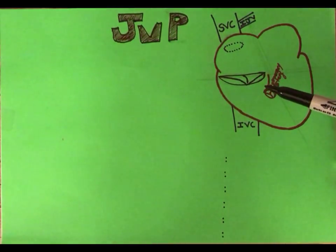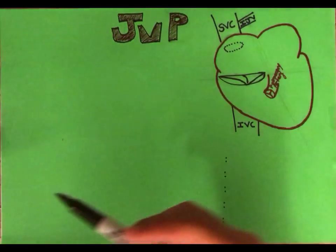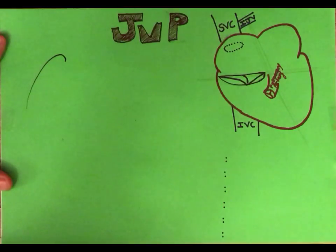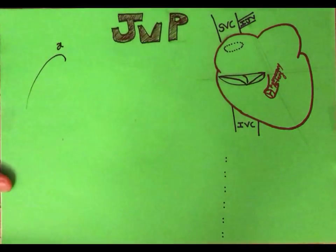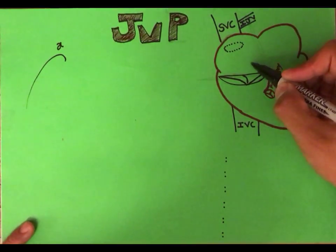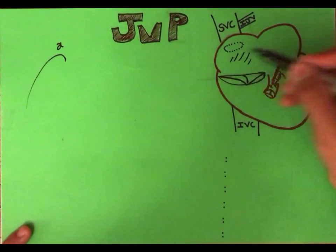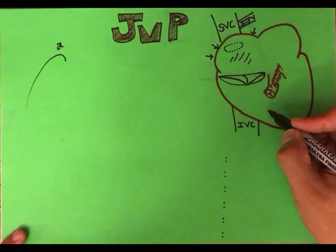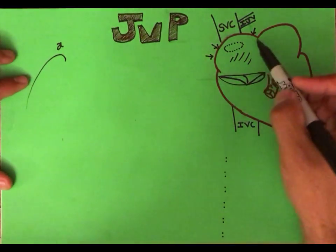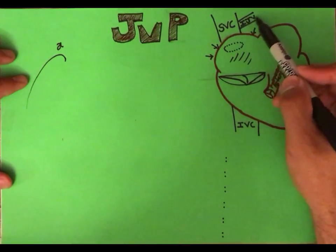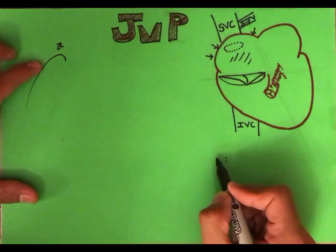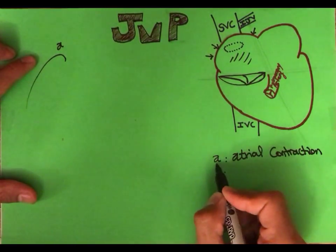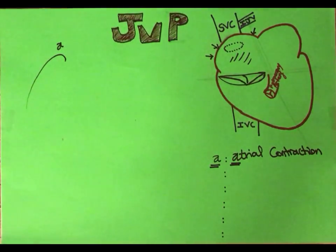The first wave is an upward wave called the A wave, which reflects atrial contraction. When blood is present in the right atrium, the right atrium contracts its wall to push blood into the right ventricle. This contraction causes a rise in pressure inside the right atrium and then a rise in pressure inside the internal jugular vein — producing the A wave. A stands for atrial contraction.